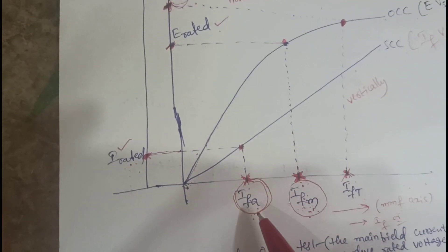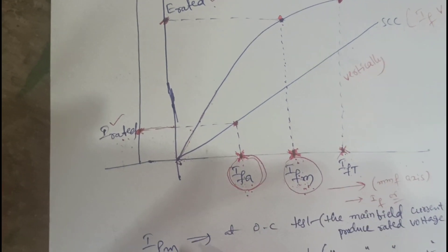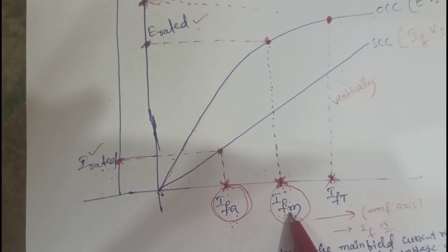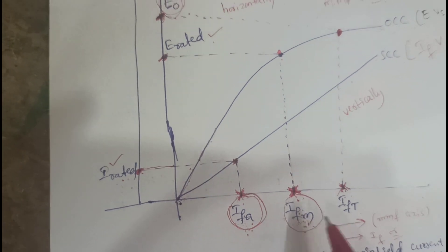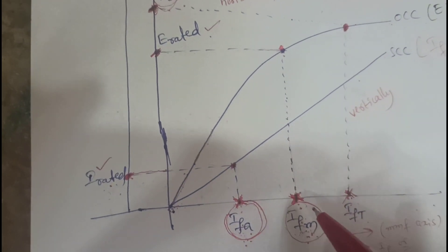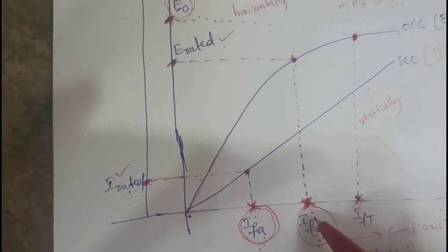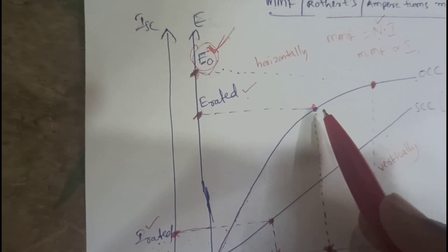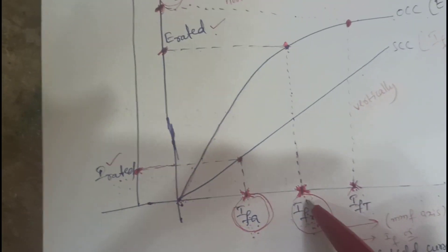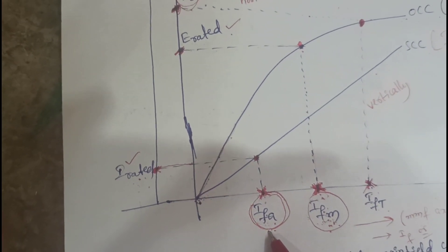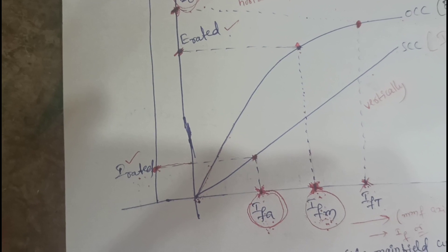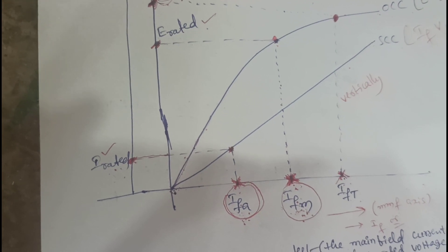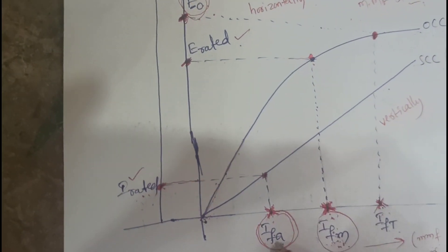Next, denote two points: IFM and IFA. IFM means the main field current required to produce the rated voltage under the OC test. IFA means the main field current required to produce the rated armature current in the SC test.